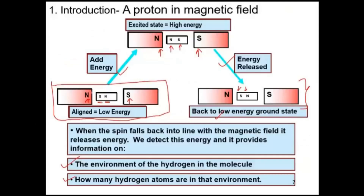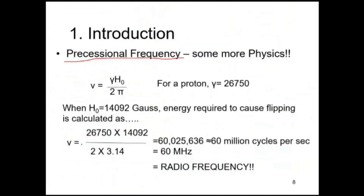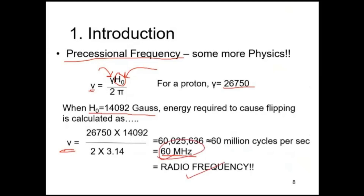From the equation, the frequency nu equals gamma times H0 divided by 2π. When H0 is kept at 14,092 Gauss, and using the fixed value of gamma for the proton, the calculated frequency comes out to 60 megahertz — that is 60 million cycles per second. 60 MHz falls into the radio frequency range.